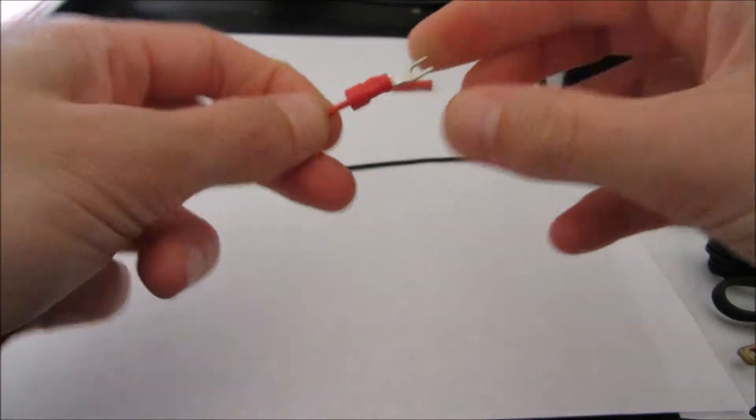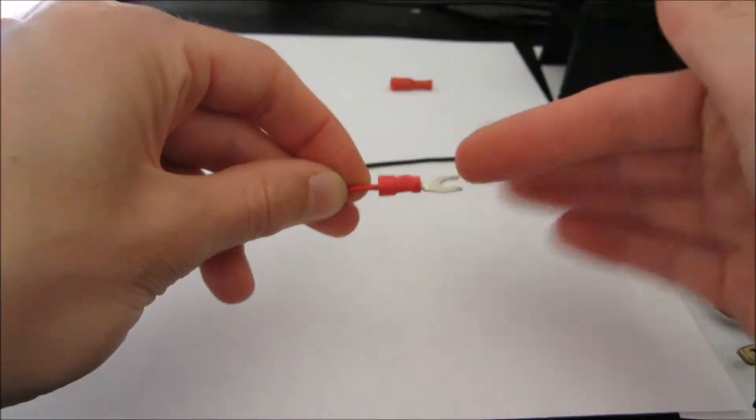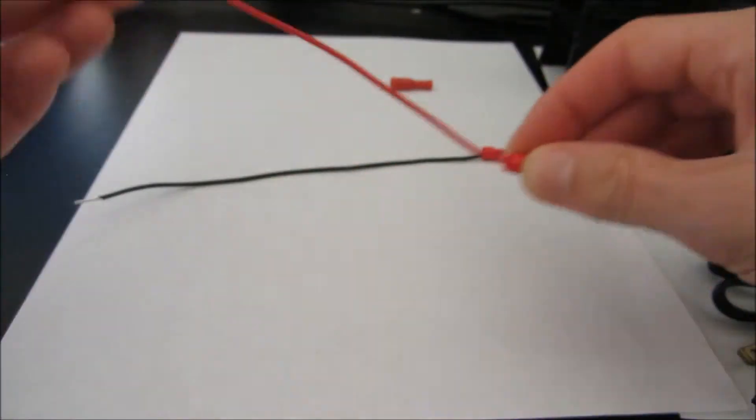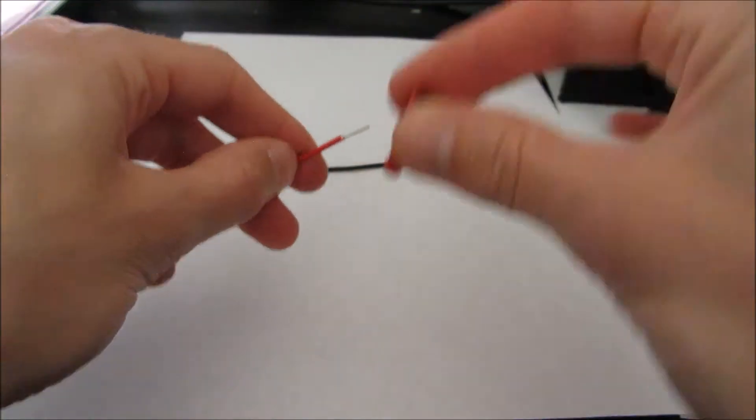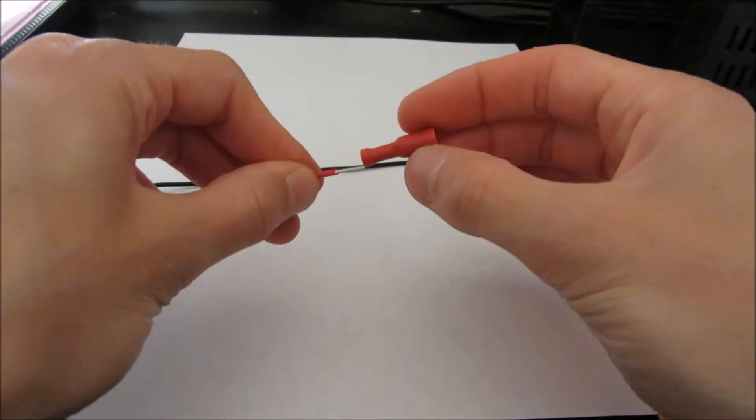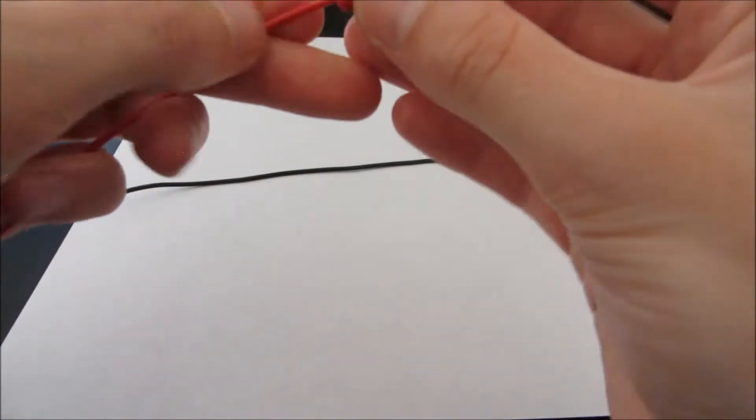And usually if it feels snug and you can see that the wire isn't pushed all the way through, we have a good connection. On the other side of the red wire, we're going to take our female connector and we will push this also through.